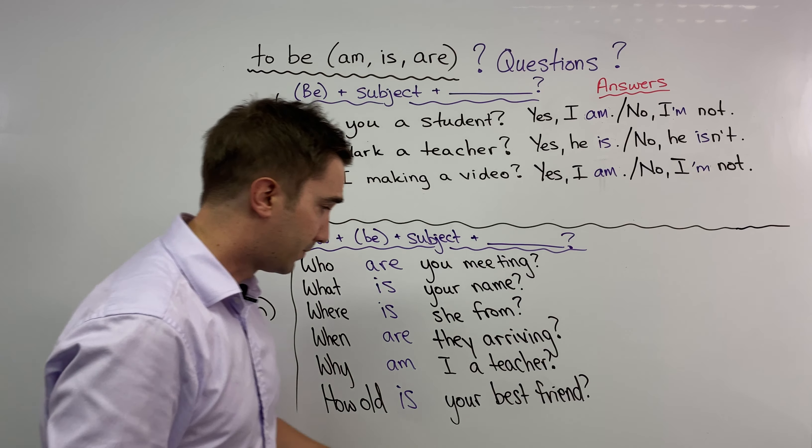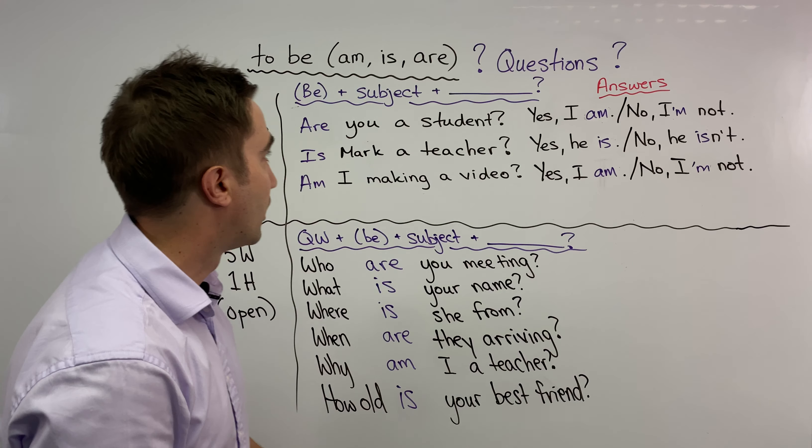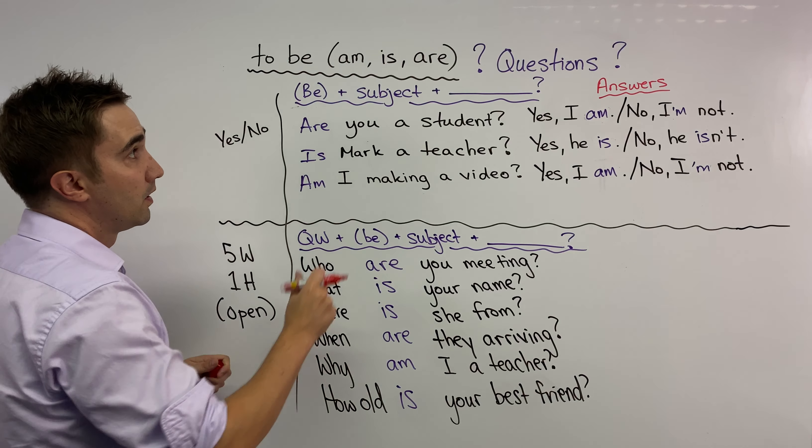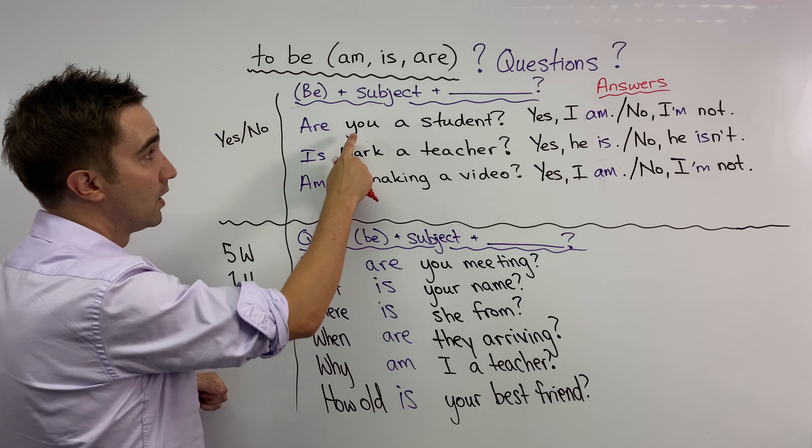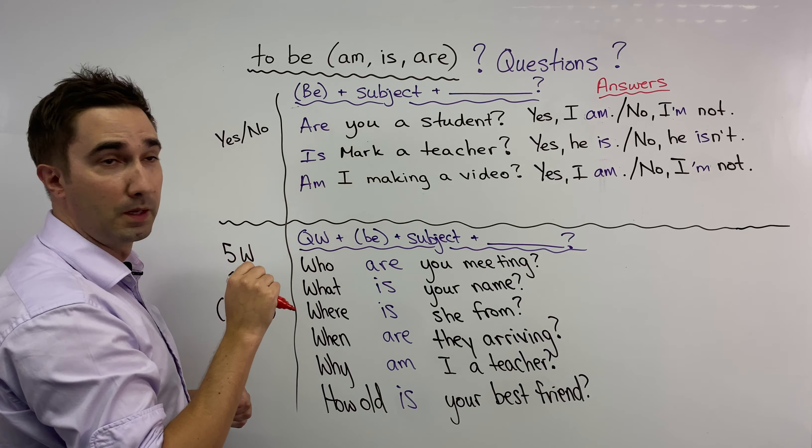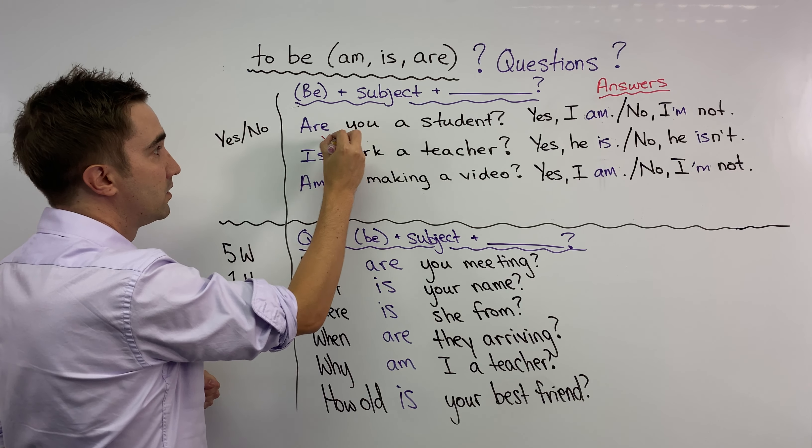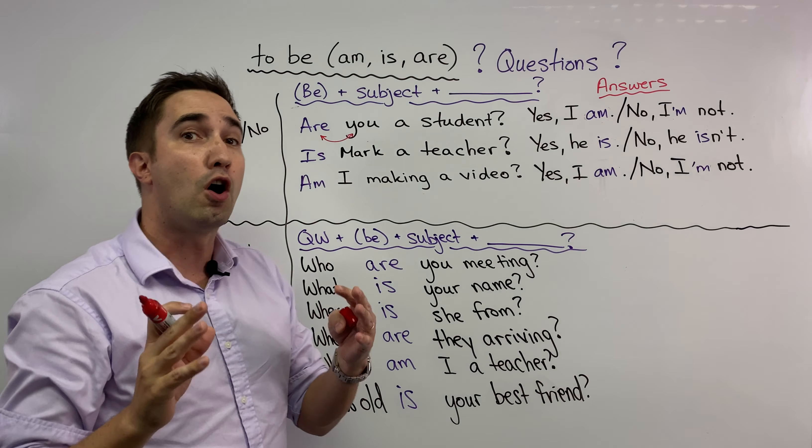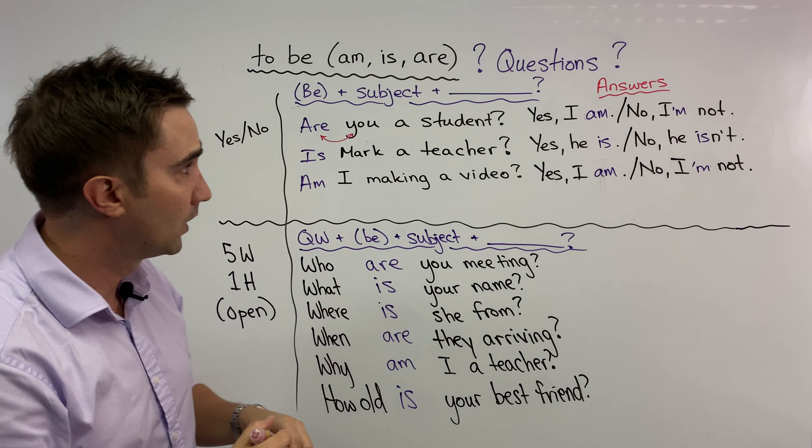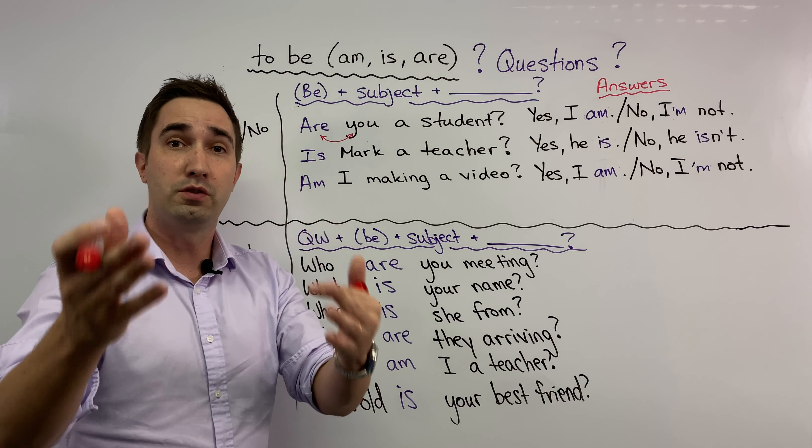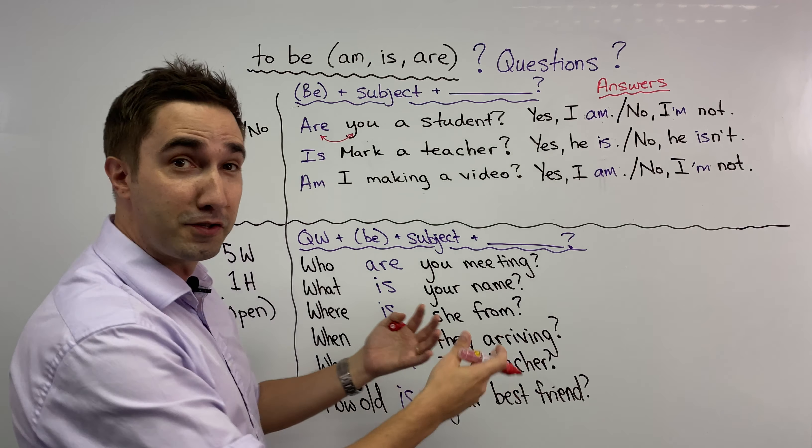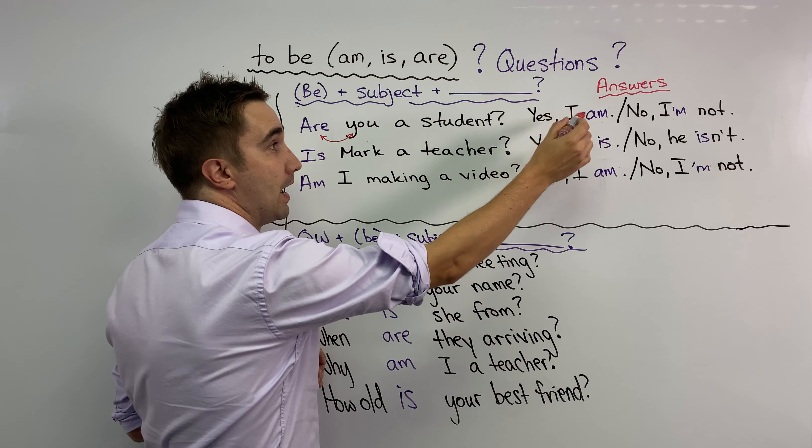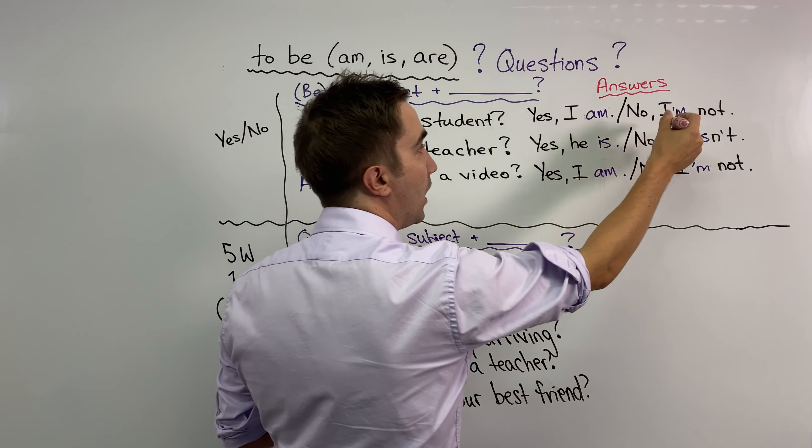Now please note this is a little bit different from a positive sentence. In a positive sentence we say you are. In a question we simply flip those two things around. So are you? I can say are you a student? And then you can answer yes I am or no I'm not.